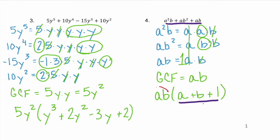If we distribute a times b to the first term, we get a squared b. We distribute it to the second term and we get a positive ab squared. If we didn't add that positive 1 to the end, our answer wouldn't match what we started with.